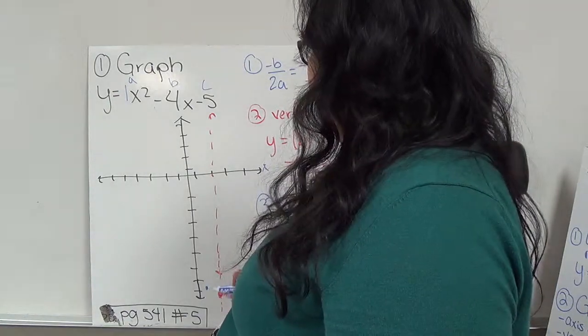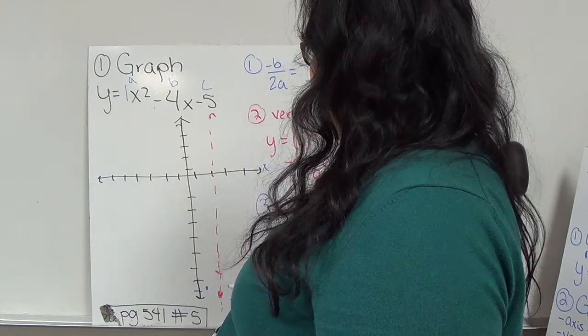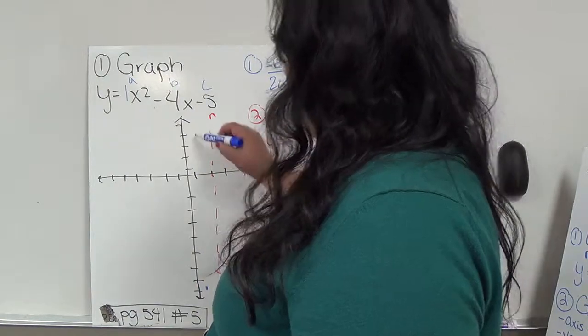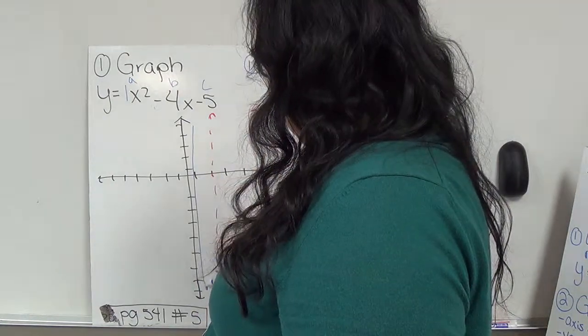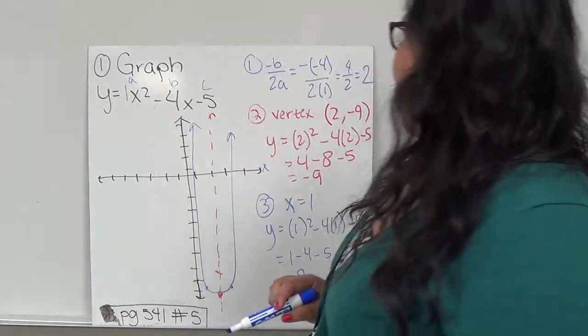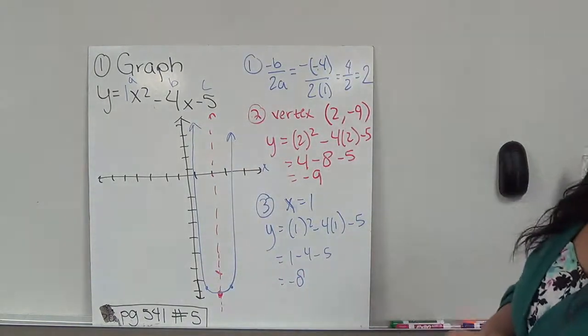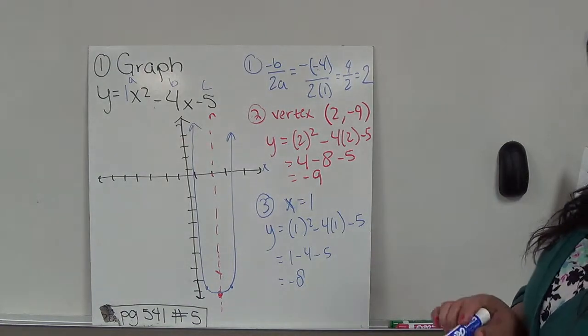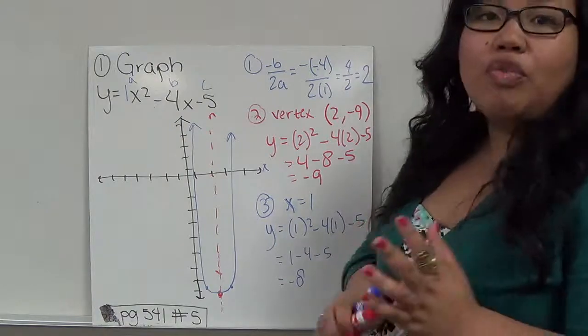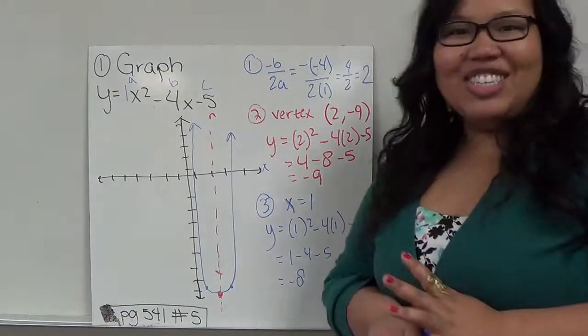And so if this is 1 away from the axis of symmetry, so that means it's also negative 8 when it's on the other side. And then I can connect the three points. And that's what my parabola looks like. So go ahead and try page 541, number 5, and I will see you in class.